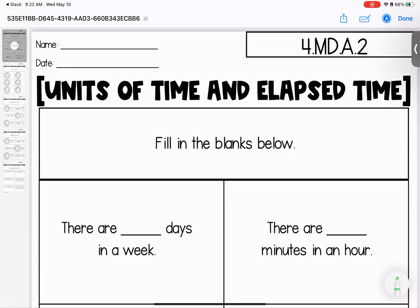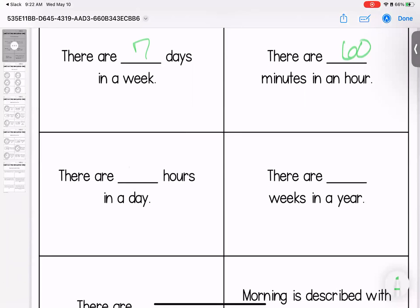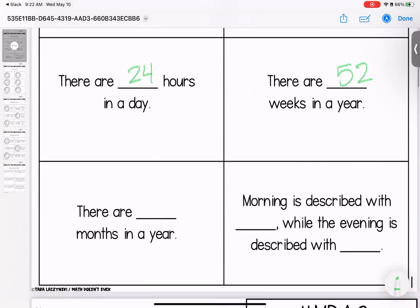Let's talk about units of time and elapsed time. The first page looks at basic knowledge of the different ways we measure time and some benchmarks. There are seven days in a week, 60 minutes in an hour, 24 hours in a day, 52 weeks in a year, 12 months in a year. Morning is described with a.m. and evening is described with p.m.